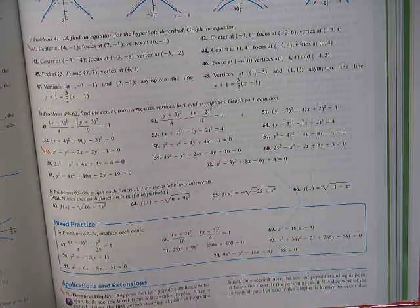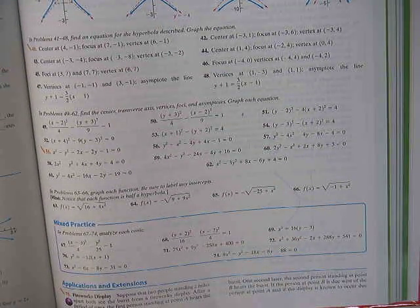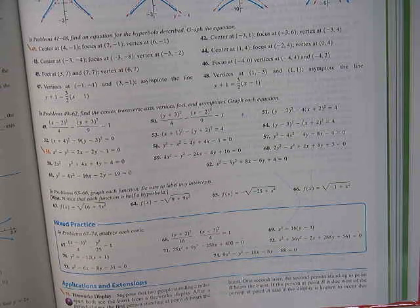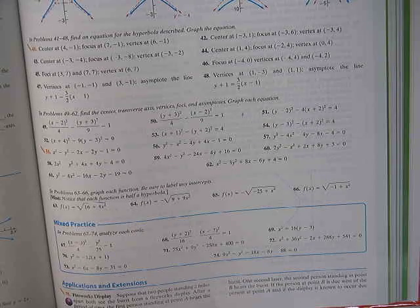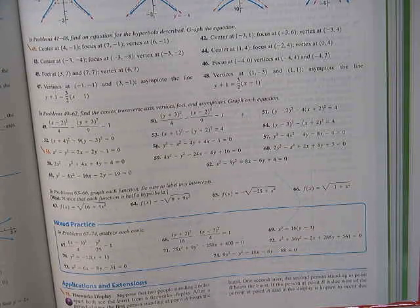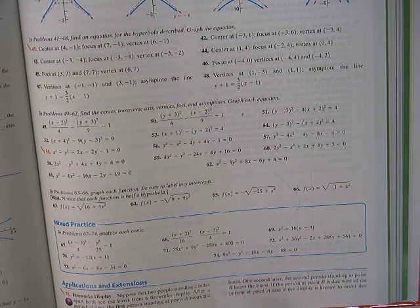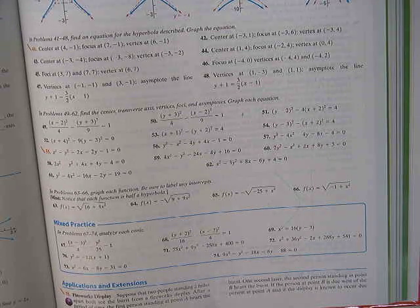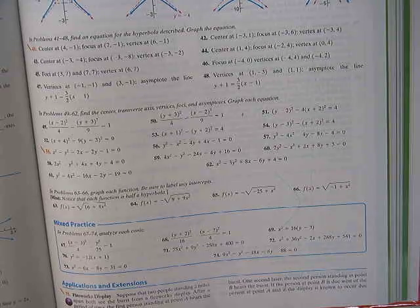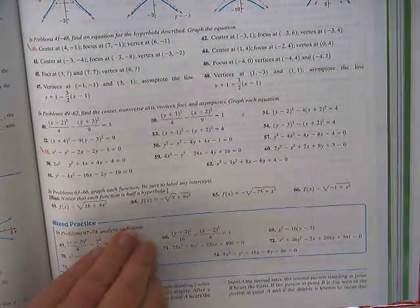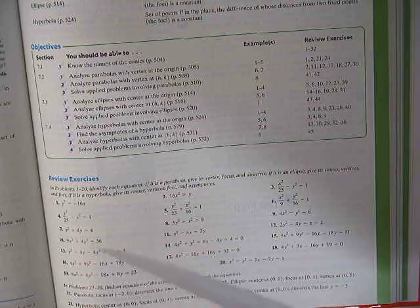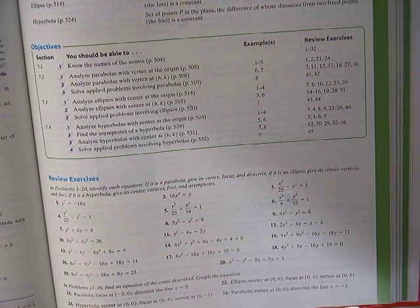Okay, number 75, fireworks display. Suppose that two people standing two miles apart both see the burst from a fireworks display. After a period of time, the first person standing at point A hears the burst. One second later, the person standing at point B hears the burst. If the person at point B is due west of the person at point A, and if the display is known to occur due north of the person at point A, where did the fireworks display occur?